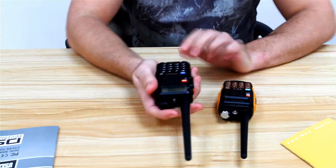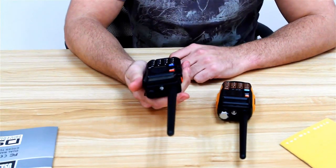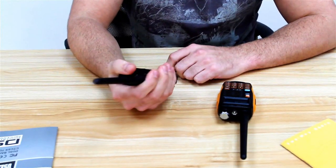And here we have the Baofeng UV5R. A little bit less durable, just a little bit smaller. It doesn't fit in your hand as well.